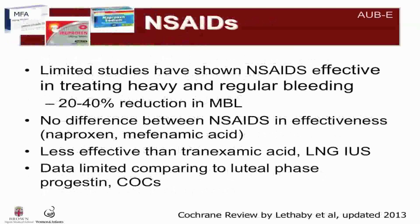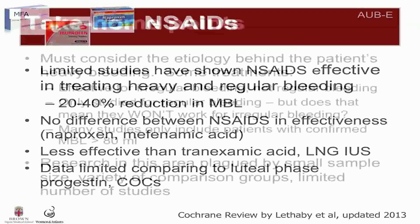Another treatment for AUB-E is NSAIDs. NSAIDs decrease the conversion of arachidonic acid to prostaglandin and shift the imbalance in the endometrium of patients with heavy bleeding to favor the vasoconstrictive prostaglandins. There are limited studies, but they've shown that NSAIDs can be effective in treating heavy and regular bleeding with a 20 to 40 percent reduction in menstrual blood loss. There's no difference between the different NSAIDs in terms of effectiveness, and they're less effective than tranexamic acid and the levonorgestrel intrauterine system. Data are currently limited comparing NSAIDs to luteal phase progestins and combined oral contraceptives.